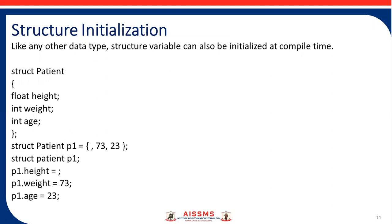Structure initialization: like any other type, structure variables can also be initialized at compile time. For example, structure patient has members float height, float weight, and int age. The structure variable is struct patient p1, and we pass values such as 73, 23, and so on. We access these structure members using the structure variable, as in p1.height, p1.weight, and p1.age.